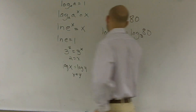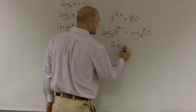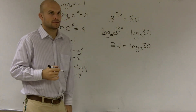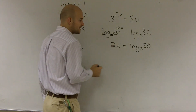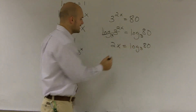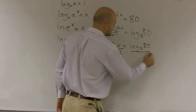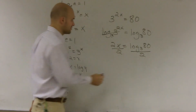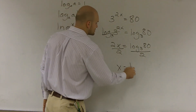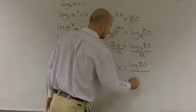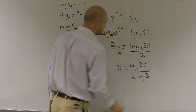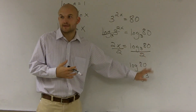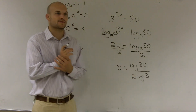So now I have log base 3 of 3, which just leaves me 2x, equals log base 3 of 80. Then I can divide by 2. And if you're going to use your calculator with change of base form, you can say x equals log of 80 over 2 times log of 3. The logarithms here could be any base — your calculator can use base 10, or you could use a natural logarithm as well.